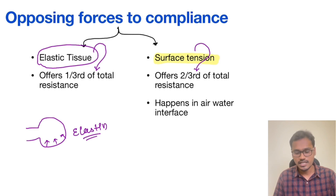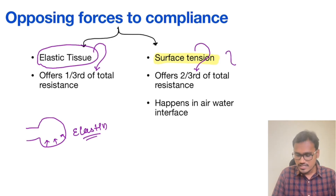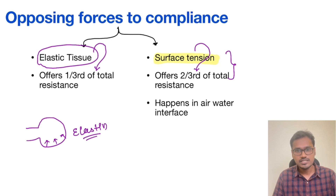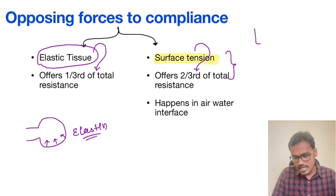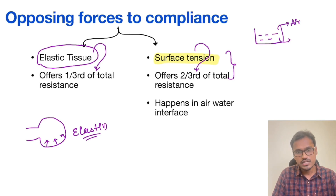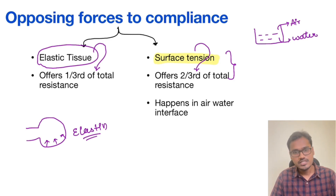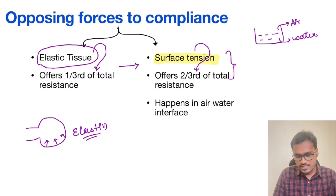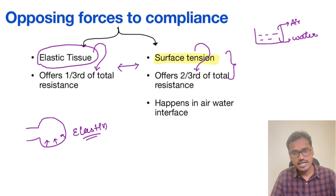Surface tension has been discussed in detail in the functional anatomy of the respiratory system. Surface tension occurs only where there is an air-water interface — wherever an air molecule and water molecule meet, surface tension acts. We stress these facts because when studying the compliance curve, the inflation curve and the deflation curve are different, and these forces are the major reasons for that difference.